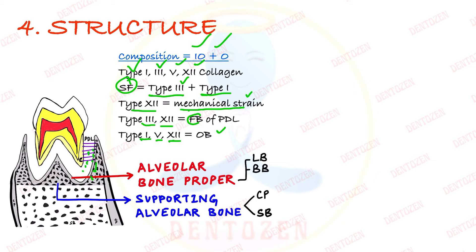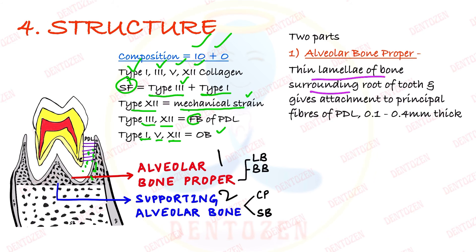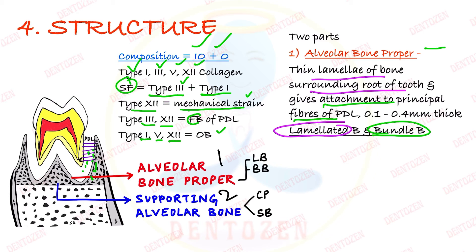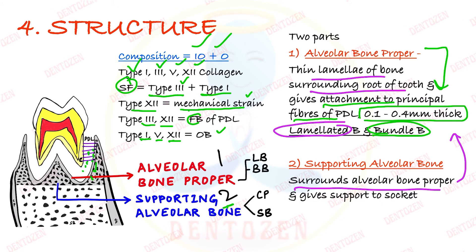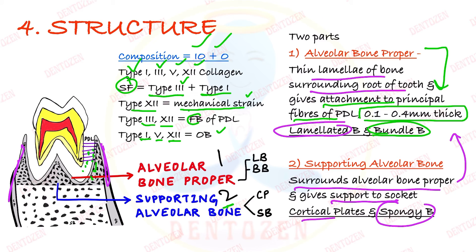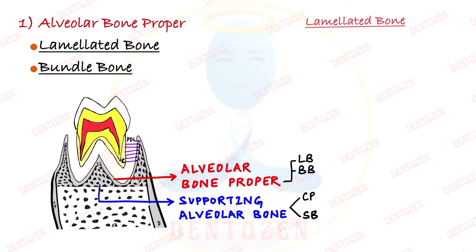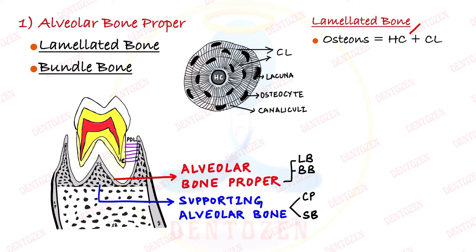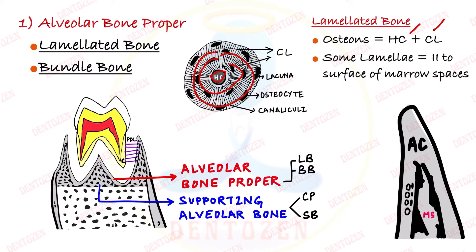Alveolar bone proper has two parts: thin lamellae of bone surrounding the root — called lamellated bone — and bundle bone, which gives attachment to principal fiber bundles. Total thickness of alveolar bone proper is 0.1 to 0.4 millimeters. Lamellated bone is made up of osteons; under the microscope we see a Haversian canal surrounded by concentric lamellae. Some lamellae are arranged parallel to the marrow spaces, and some form full Haversian systems.